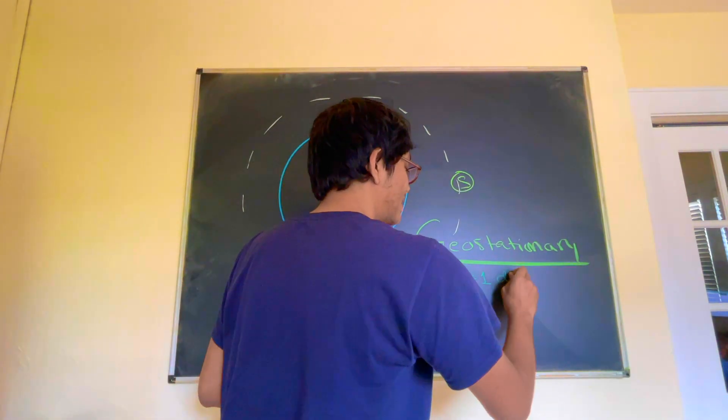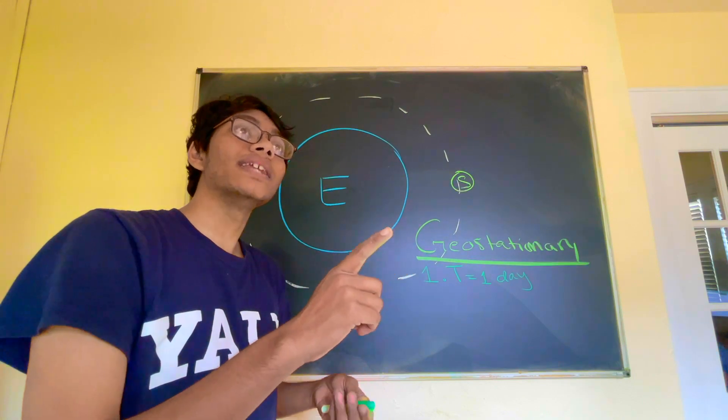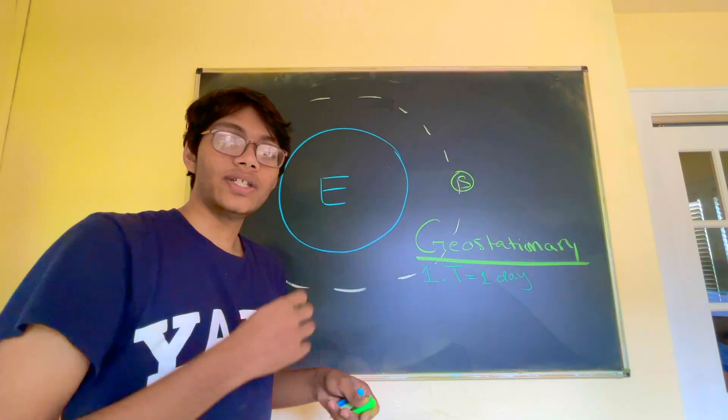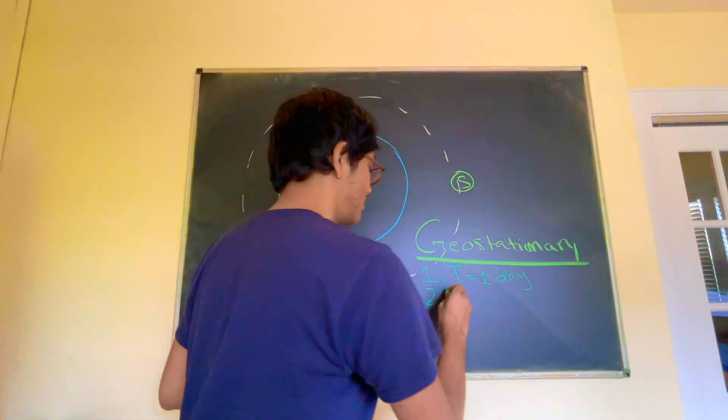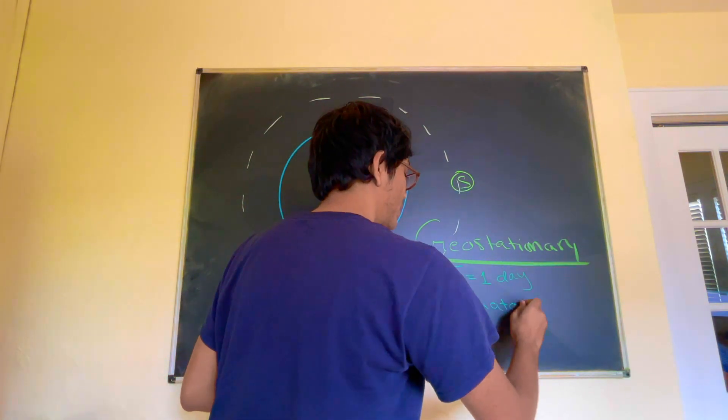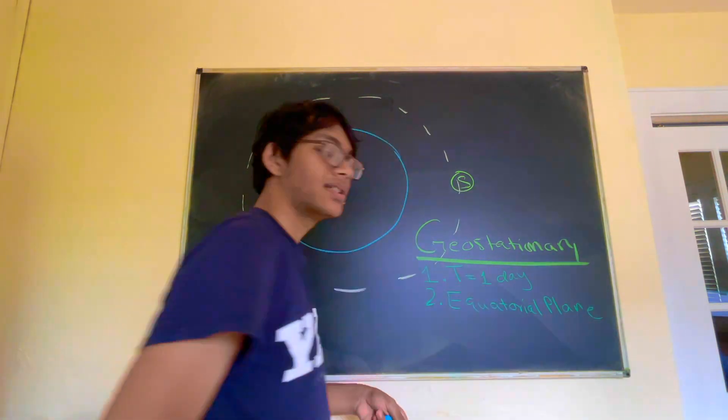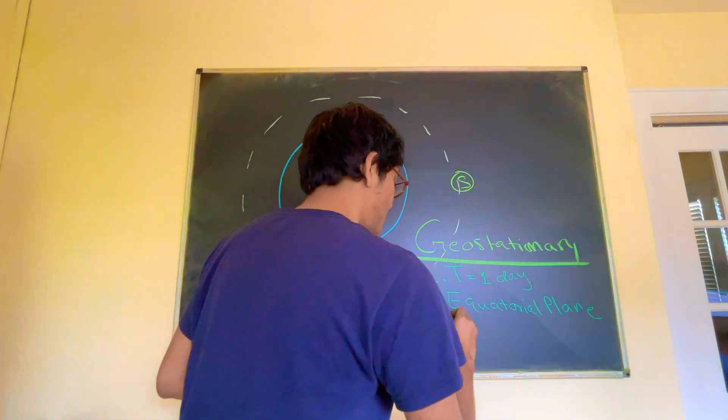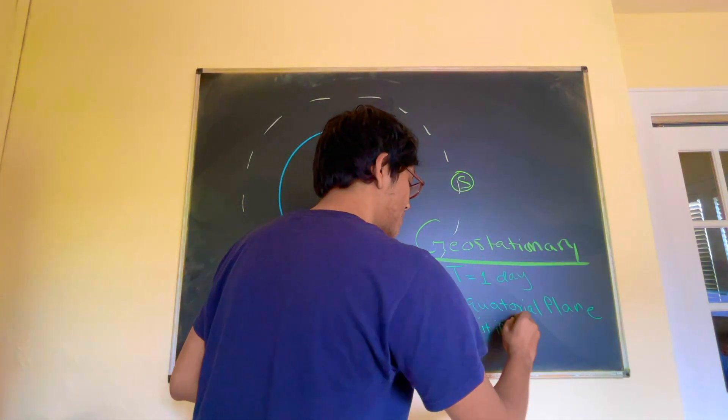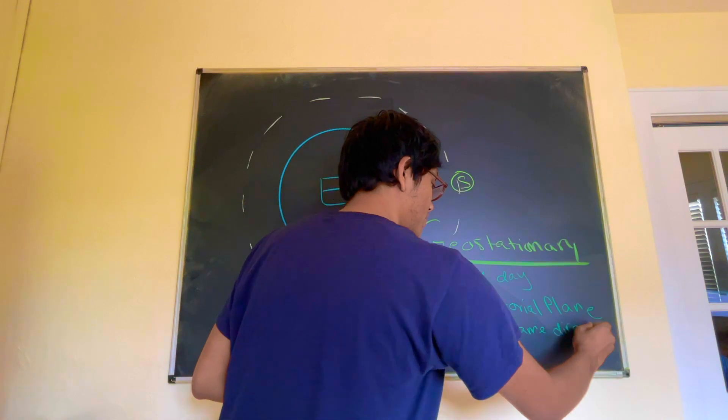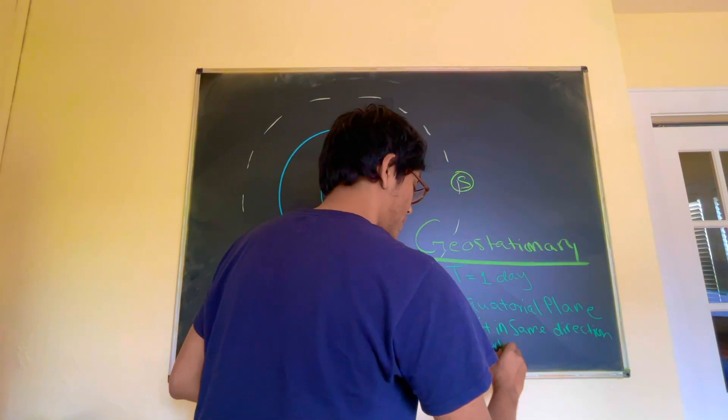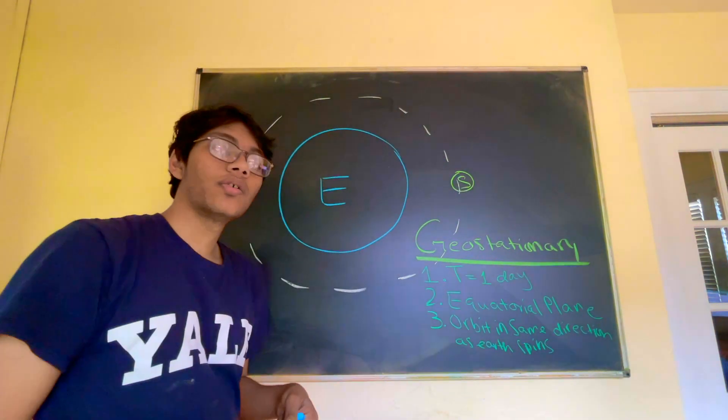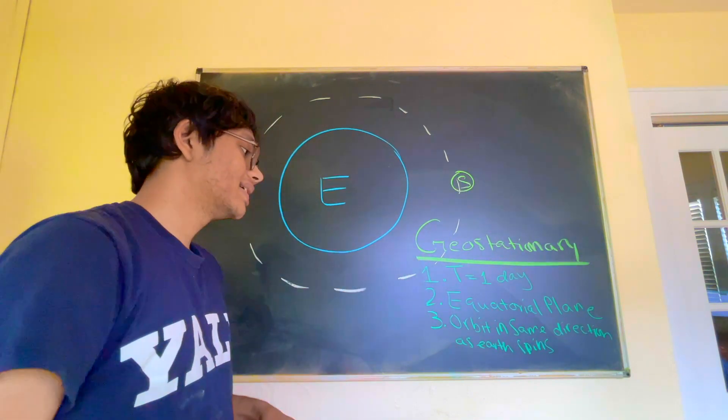And so on and so forth, the next day you see the same thing. That only happens for geostationary satellites, which have a period of one day. That's why you see them in the same spot every day. They also have another condition, which is that they have to orbit the Earth around the equatorial plane. And finally, the geostationary satellites have to have the final condition, which is that they have to orbit in the same direction as the Earth is spinning.